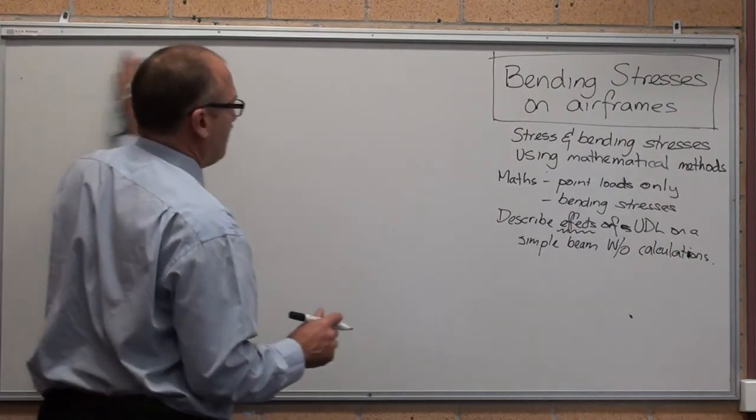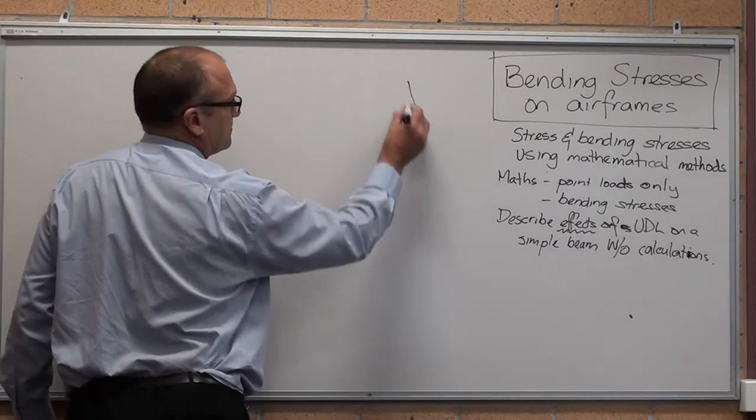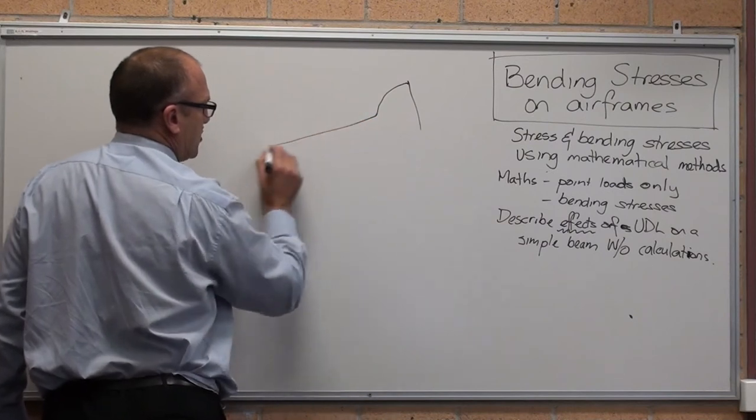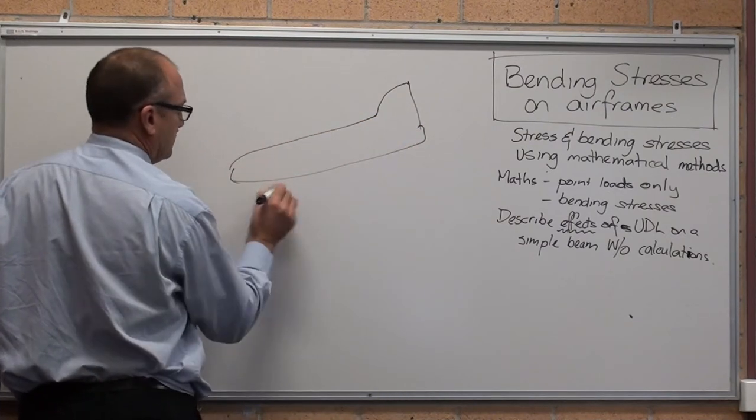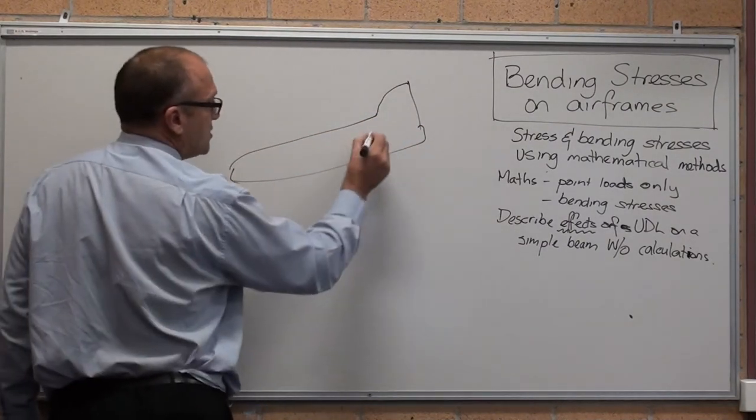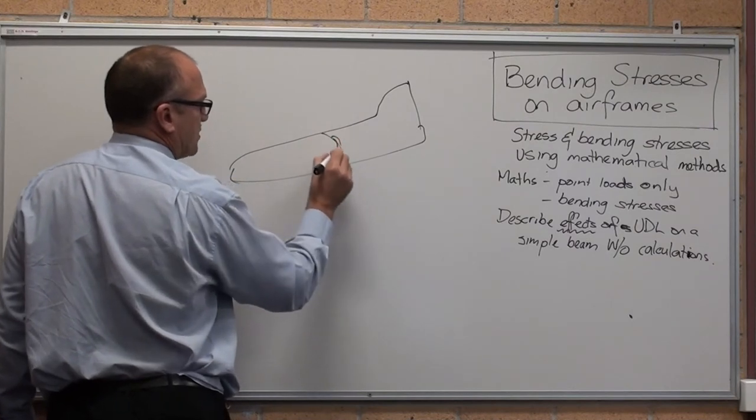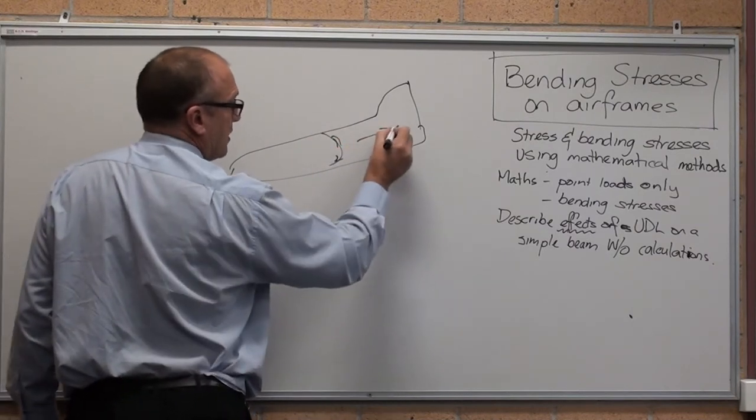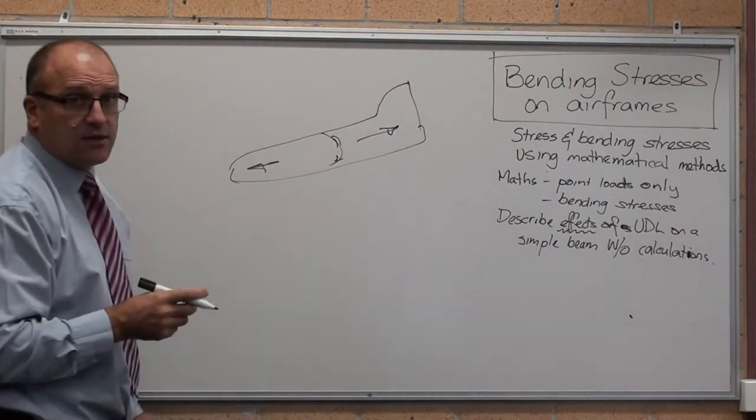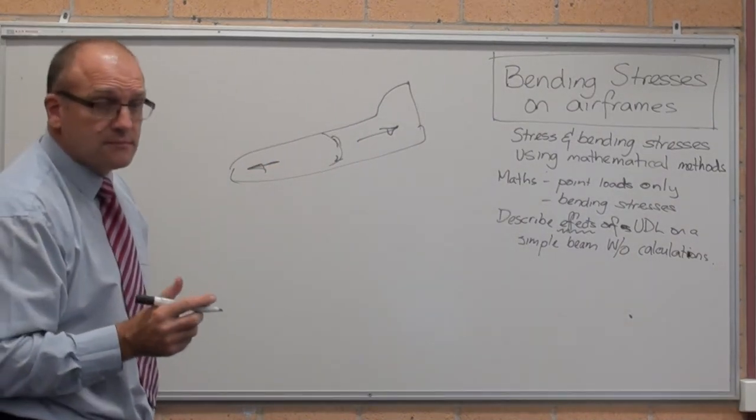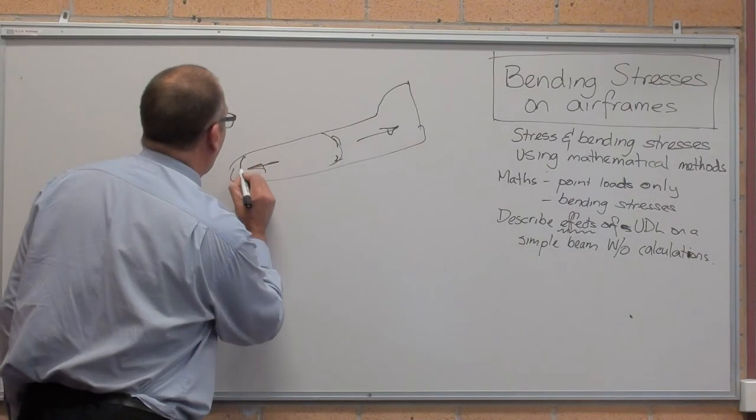If you look at the aircraft from nose to tail, because that's pressurized, we've got the hoop stressors going that way. Something's got to stop the front and the back of the tail from popping off. They've got a bulkhead.